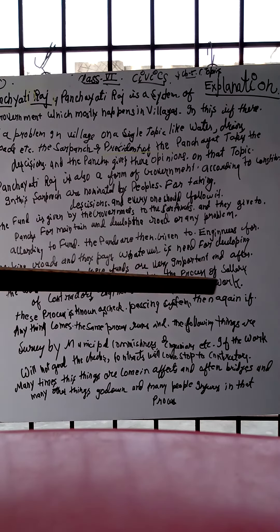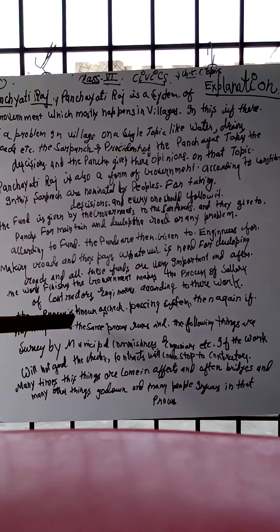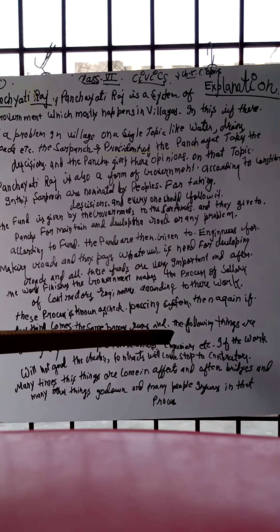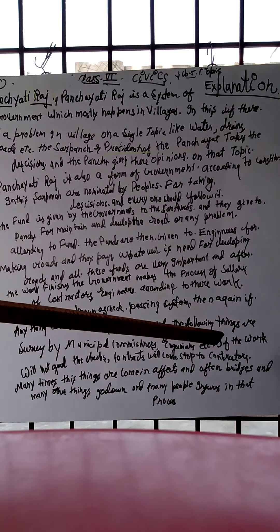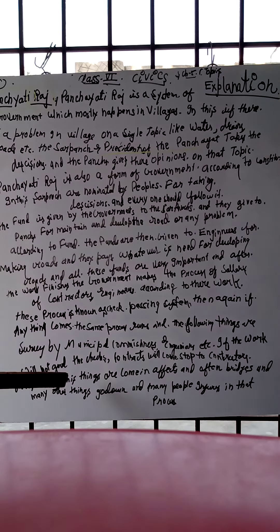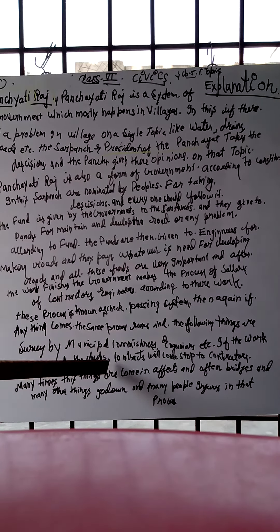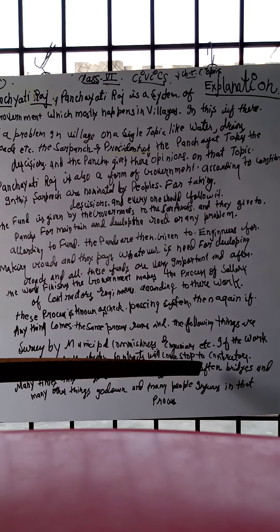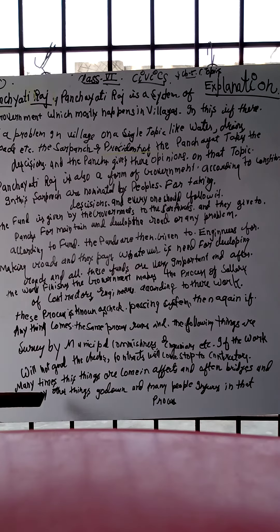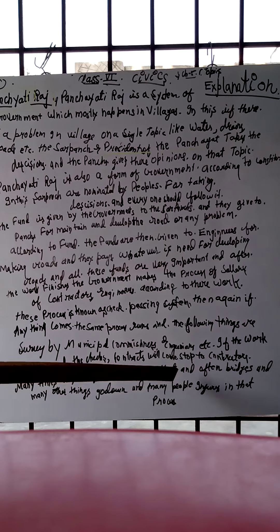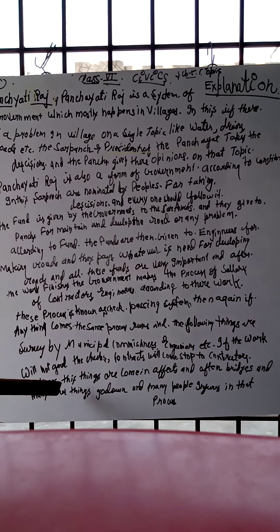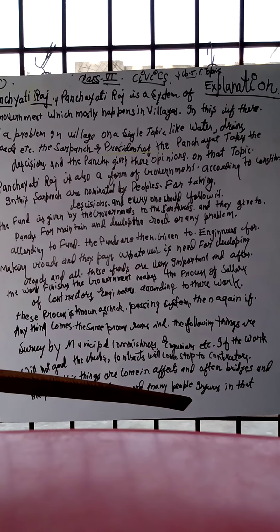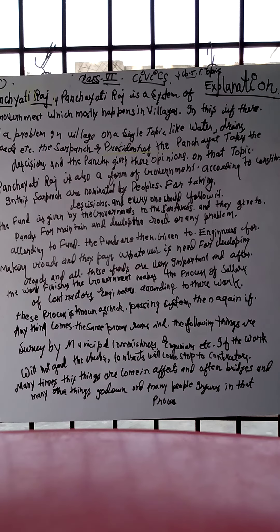If anything comes up, the same process runs again. The work is surveyed by municipal commissioners, engineers, etc. If the work is not good, the checks to the contractors will stop. Many times these issues have effects, and often bridges and other structures collapse, causing injuries to many people.